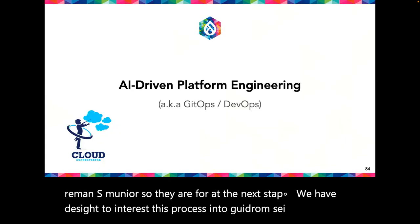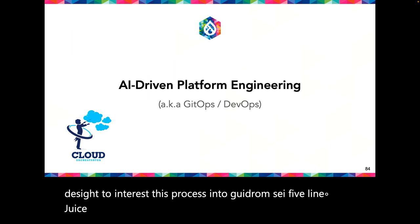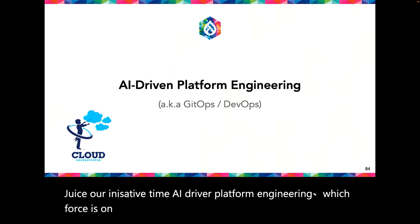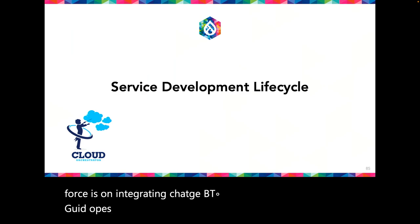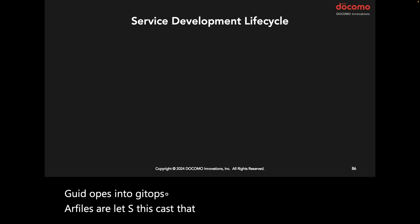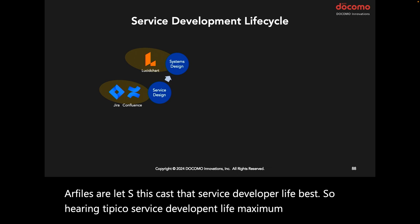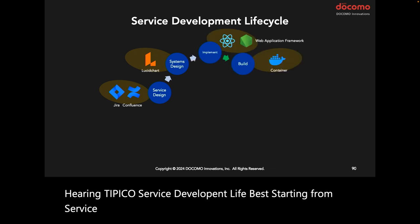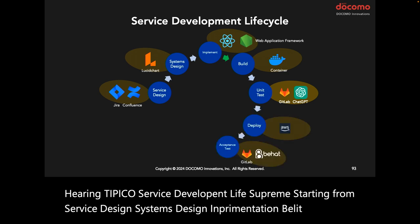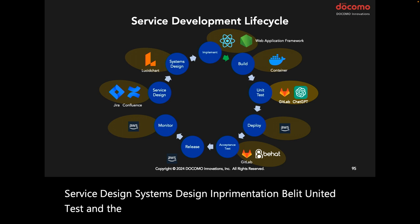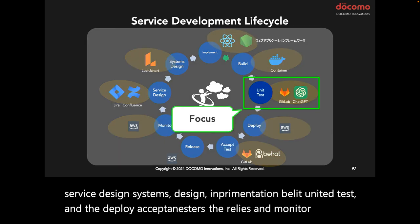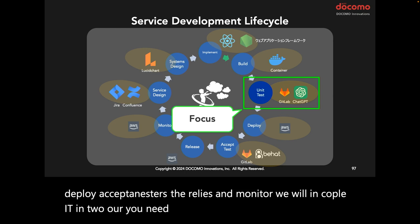Now I will introduce our initiative titled AI-driven platform engineering, which focuses on integrating ChatGPT into GitOps. Let's discuss the service development lifecycle. Here is the typical lifecycle: service design, systems design, implementation, build, unit test, deploy, acceptance test, release, and monitor. We will incorporate ChatGPT code review into our unit testing phase to automate the process.